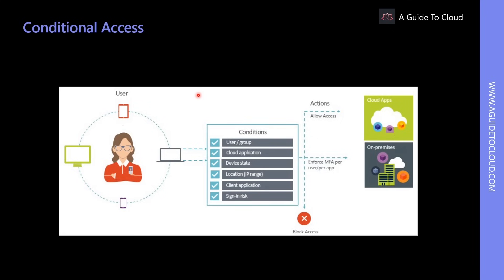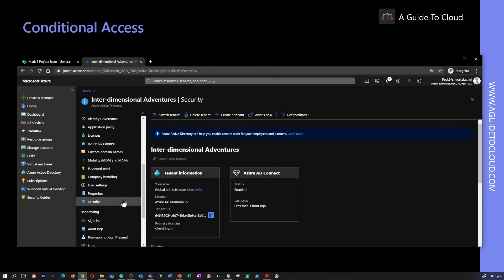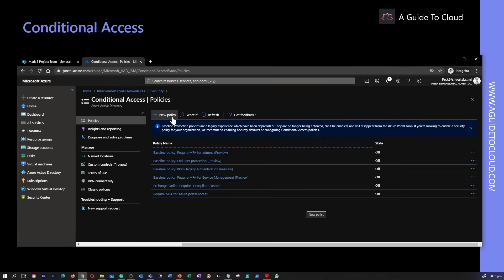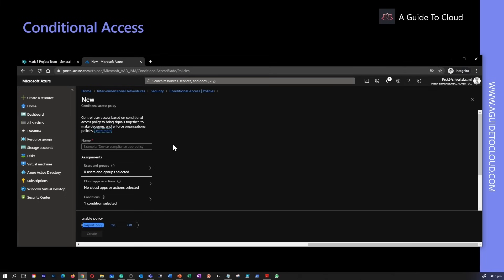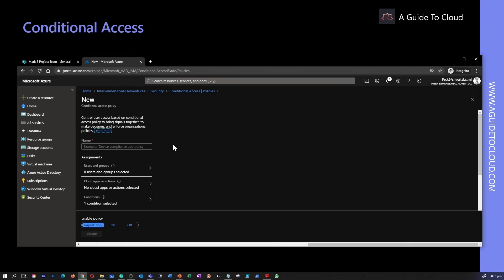Conditional access is the set of rules for access control based on various specifications such as client service, registration procedure, location, and compliance status. This is used to decide whether a user's access to company data is permitted. By using conditional access policies, you can apply the right access controls when needed to keep your organization secure without getting in users' way when not needed.